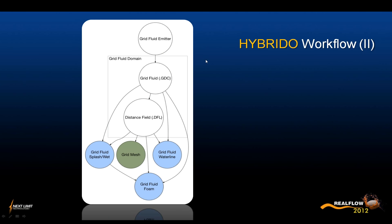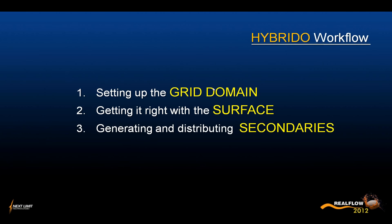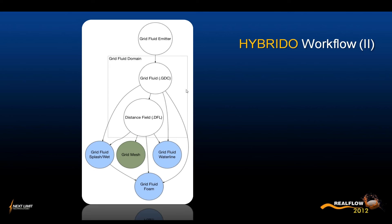In this flowchart, we can see more or less what we were talking about earlier. We're going to be emitting from a volume geometry — that's the way Hybrido emission works — and we're going to be caching grid fluid data, which is step one. We're going to be caching GDC files. Those files, as you progress and increase the resolution, can be really, really big. So you have to check in advance if you're going to have enough space on your hard drives, and if you're moving those files around, you also have to account for network bandwidth.